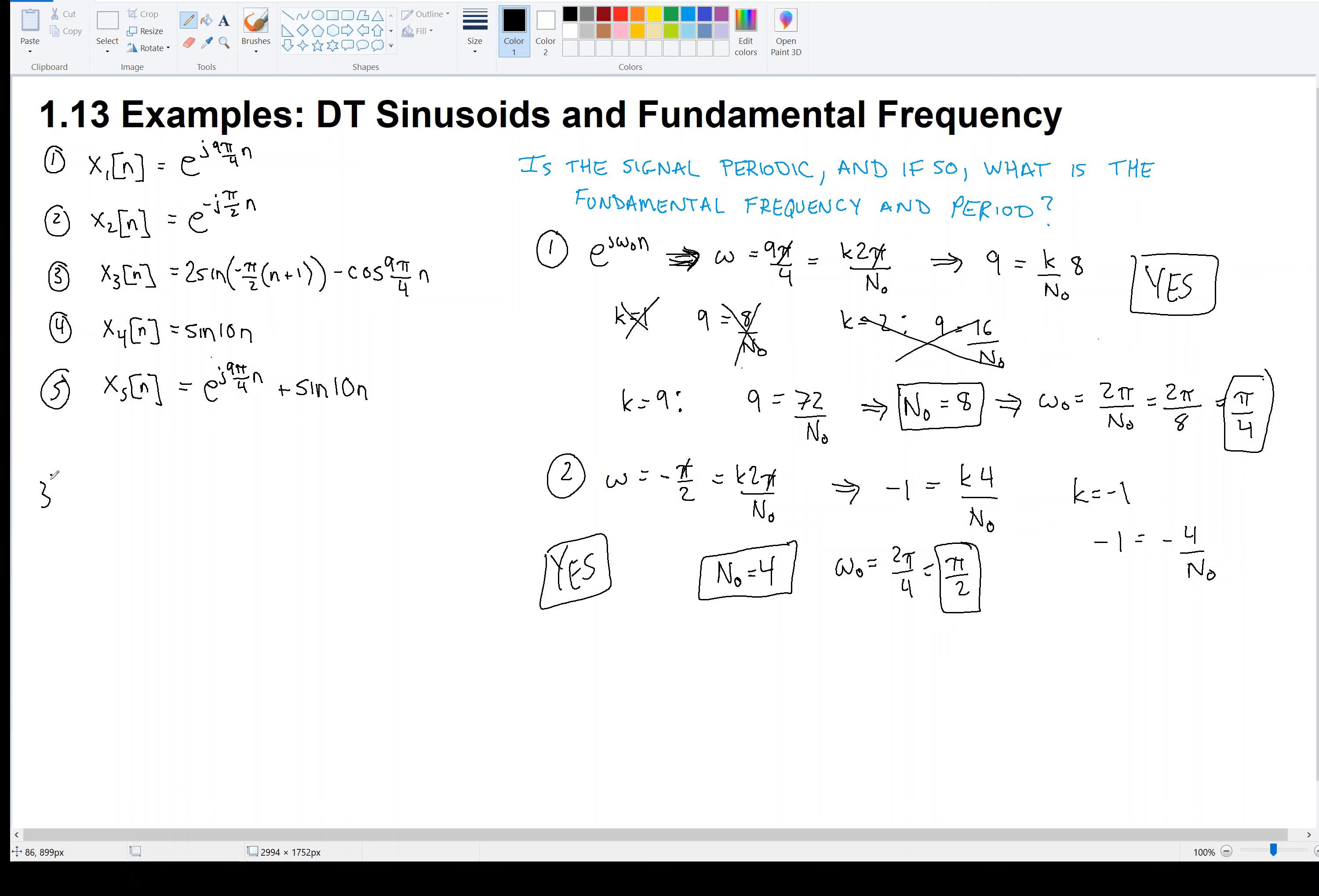Moving on, let's take a look at example 3. Example 3 is an interesting one because if we distribute that negative π over 2, we have 2 times the sine of negative π over 2n minus π over 2 minus cosine of 9π over 4n. Now, we've just shown that the ω₀ or the frequency 9π over 4, this has a period of 8. That was example 1. And here, the frequency is like example 2, and we showed that this has a period of 4.